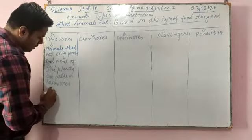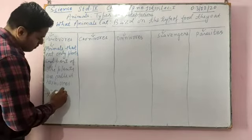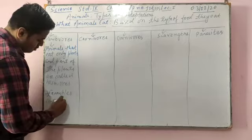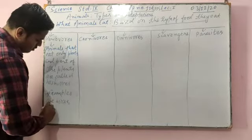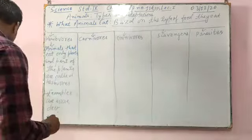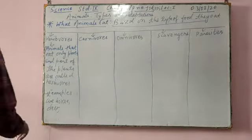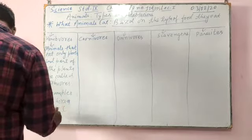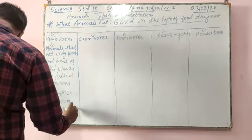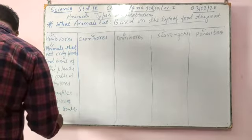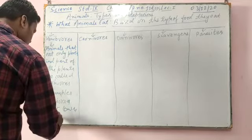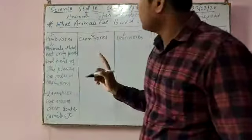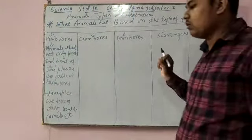So animals that eat only plants and parts of plants are called herbivores. Examples are horse, deer, cows, camels, etc.